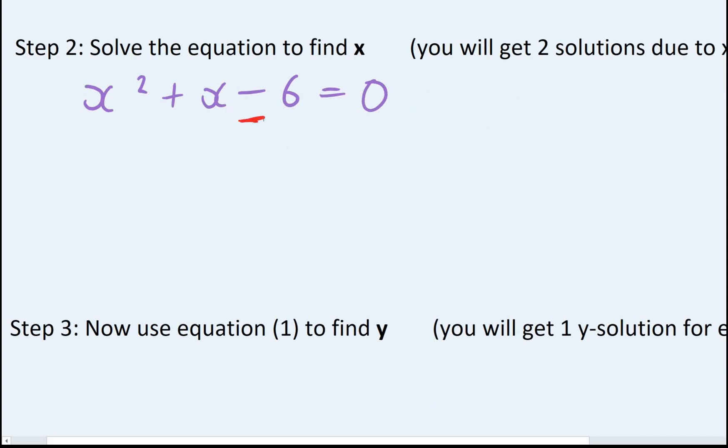We have a minus sign here, that's fairly key. That means I'm looking for two numbers that multiply to give me six, but I want the difference to be how many x's we have. Again, there's no number, means there is a one there. This is going to be three and two.